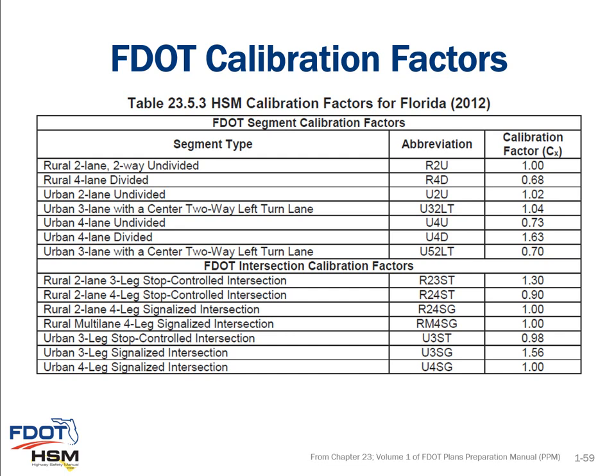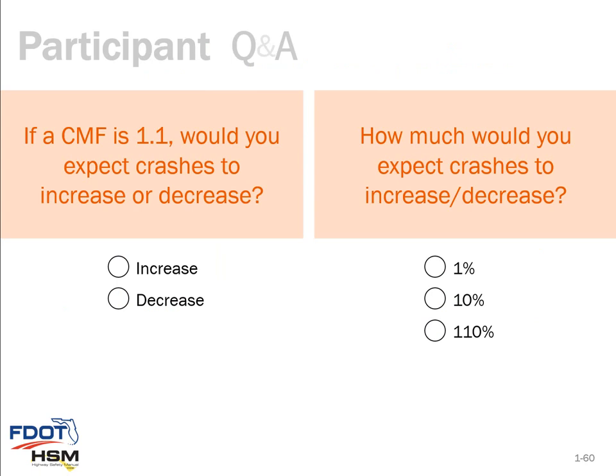A question to the audience: if a crash modification factor is 1.1, would you expect crashes to increase or decrease, and by how much would you expect the crashes to increase or decrease?